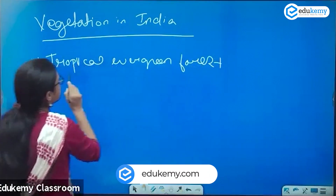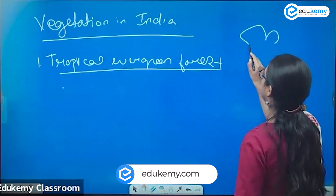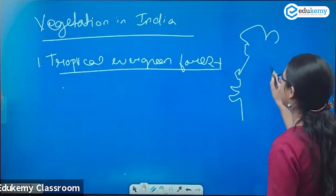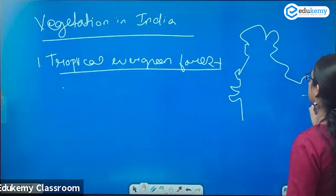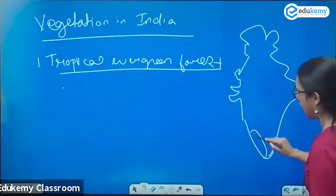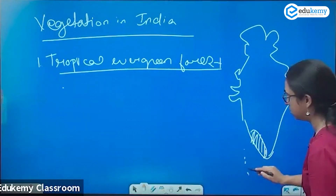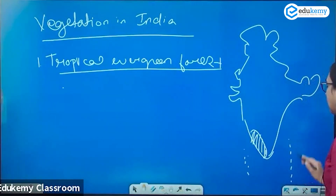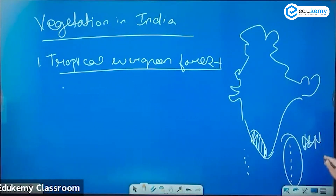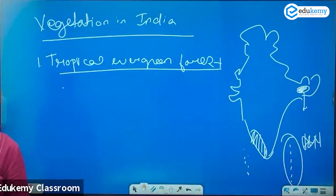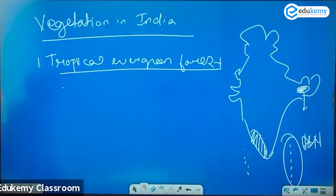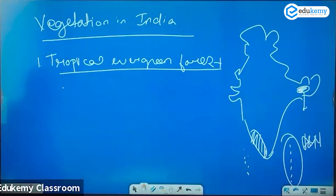Can somebody help me out with the regions? India is a tropical country, so temperature would not be a major issue. But the major issue is rainfall. Can we have it in Kerala? Can we have it in Andaman and Nicobar? We are trying to overlap the rainfall map with the tropical evergreen forest. They are found on the western slope of the Western Ghats, the hills of the northeastern region, and Andaman and Nicobar.